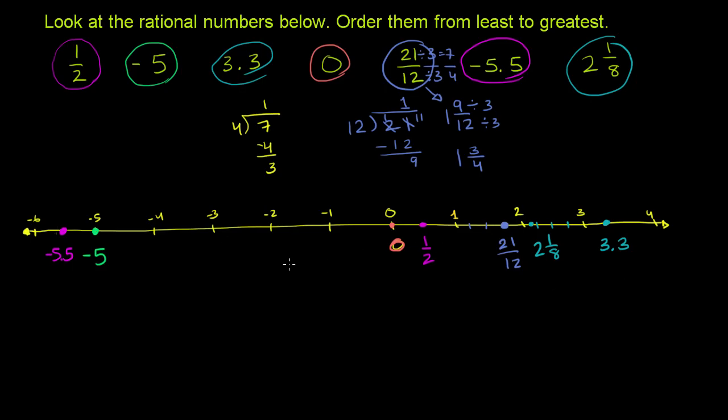So now we've essentially ordered them because we stuck them all on this number line. The order is negative 5.5 is the smallest. Then negative 5. Then 0. And then positive 1-half. Then 21 over 12. Then 2 and 1-eighth. And then 3.3. And we're done.